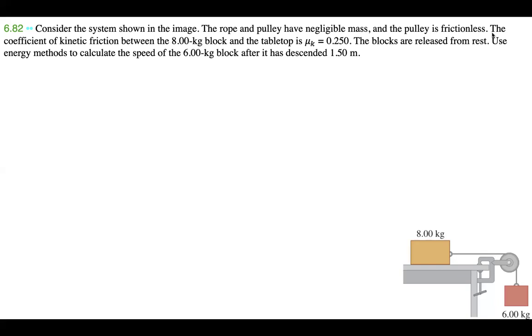It's going to be problem 6.82 from Young and Friedman's University Physics textbook. Let's get started. This is part two of the last problem that I uploaded. Consider the system shown in the image. The rope and pulley have negligible mass and the pulley is frictionless.